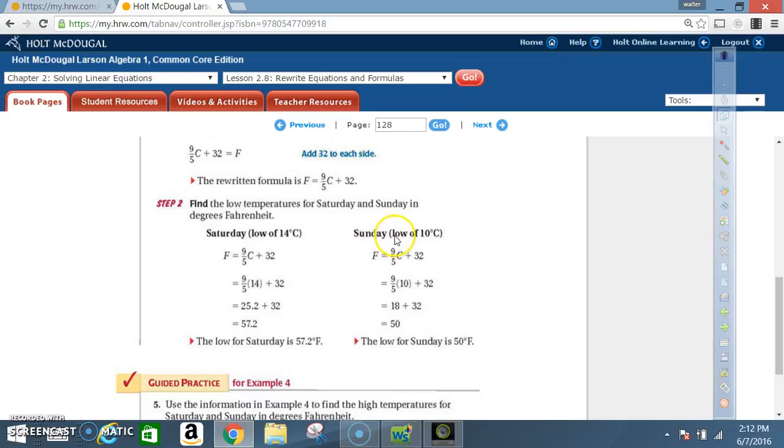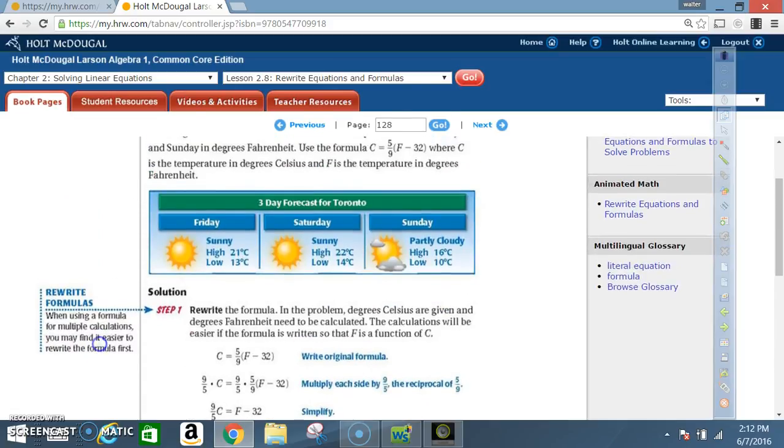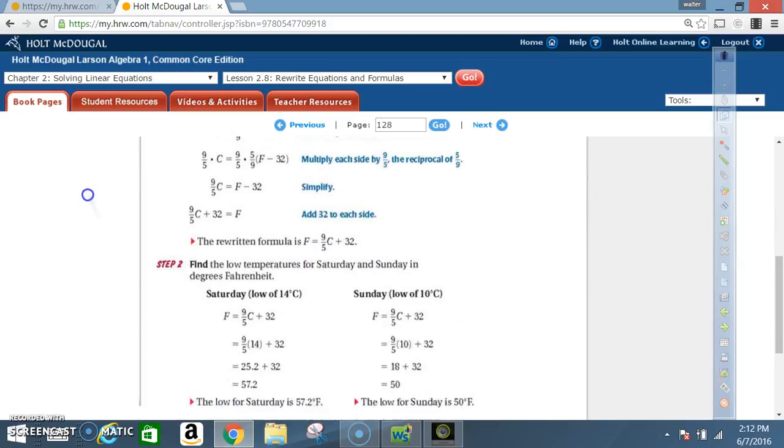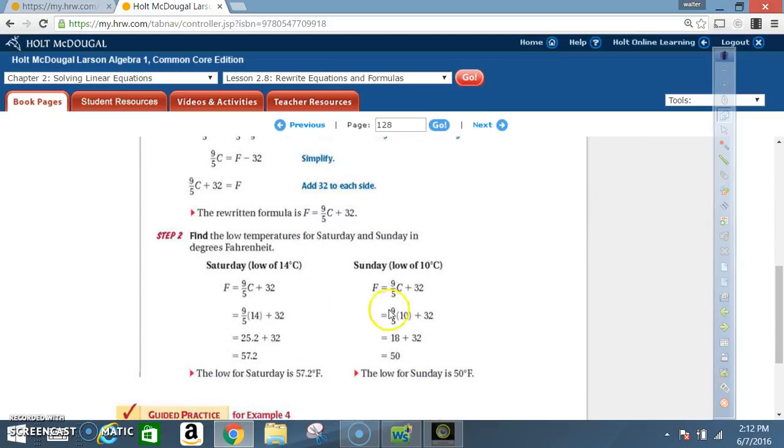We do the same thing for Sunday. The low for Sunday was 10 degrees. So in the same formula, we're going to use F equals 9 over 5 times C plus 32. And in place of C, we're going to put 10. 9 over 5 times 10 plus 32. 9 over 5 times 10, that would give you 18. 18 plus 32 is 50. So the low for Sunday's temperature is 50 degrees Fahrenheit.